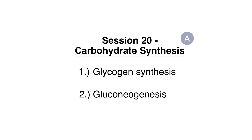Looking at panel A, the next set of pathways on which we're going to focus concerns carbohydrate biosynthesis. We're going to look at the pathway by which glycogen is made. Glycogen is the polymeric form of glucose that's very readily available for energy production. The second pathway is gluconeogenesis. The organs that utilize glucose as their metabolic fuel prefer to have glucose at a concentration of about 100 milligrams per deciliter in the blood.